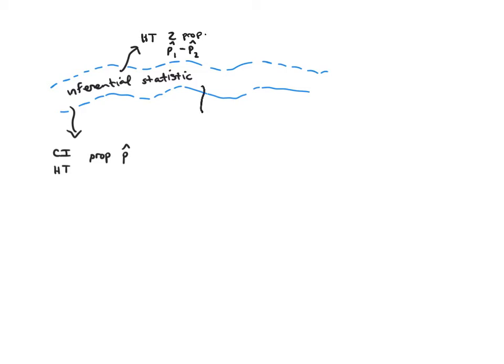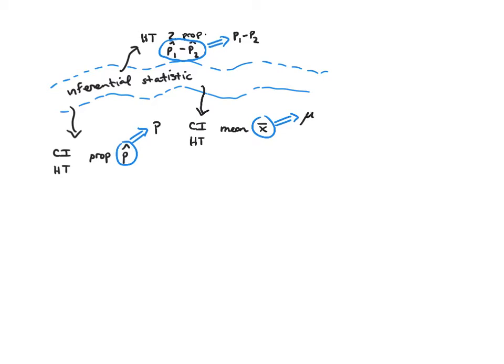We walked down a little bit further and said now instead of proportions, we're going to look at means. We did confidence intervals and hypothesis tests for a mean x-bar. In each of these cases, we are using statistics — p-hat, x-bar, p-1-hat minus p-2-hat — to infer about the population parameters. In the two-proportion case it would be p-1 minus p-2; for a single proportion it's p; and for a mean, we use mu to refer to the mean of the population.